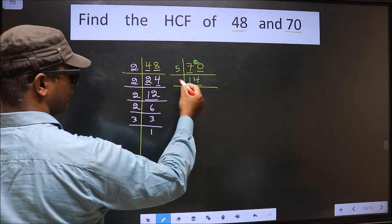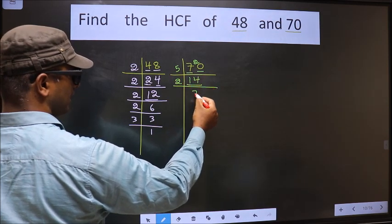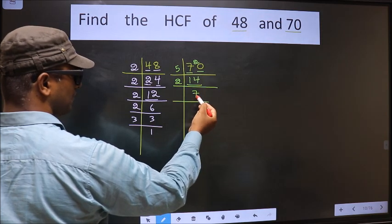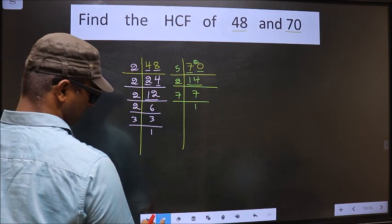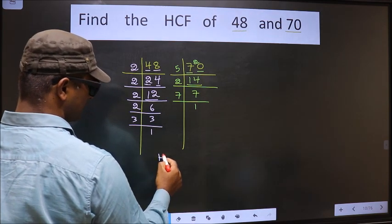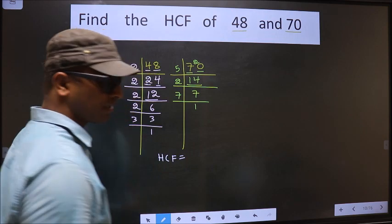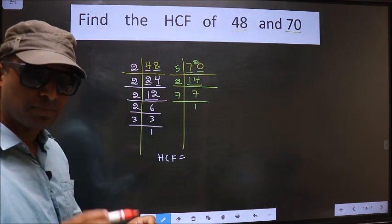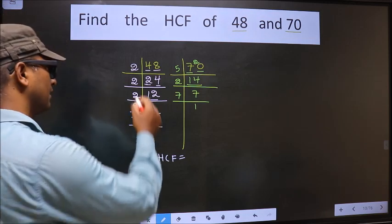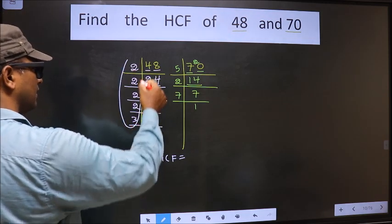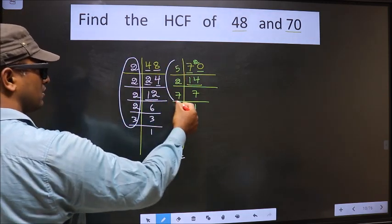Now here we have 14. 14 is 2 times 7 is 14. Now we have 7. 7 is a prime number, so 7 times 1 is 7. So our HCF is the product of numbers which should be present here and also here.